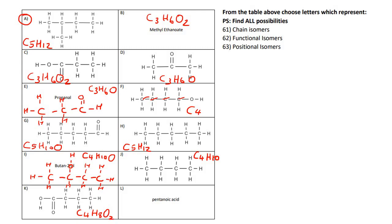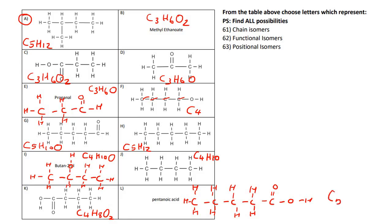Pentanoic acid is a carboxylic acid with five carbons. Drawing it out with the double bond oxygen and OH on the end, and hydrogens on the rest, gives us five carbons, ten hydrogens, and two oxygens.